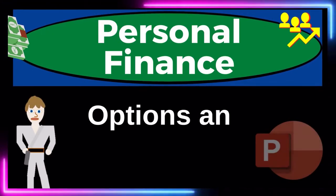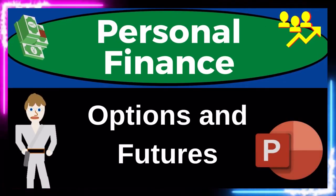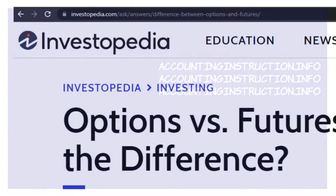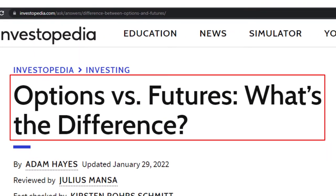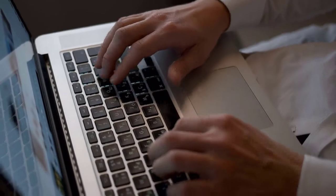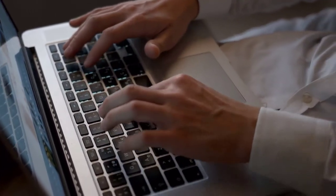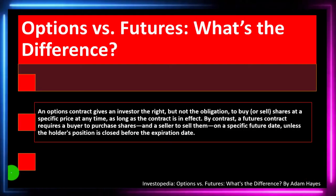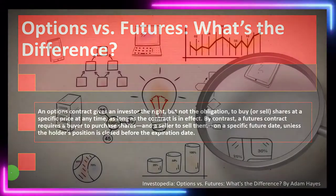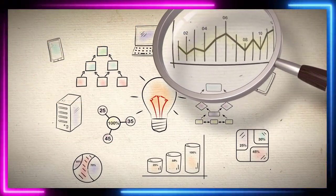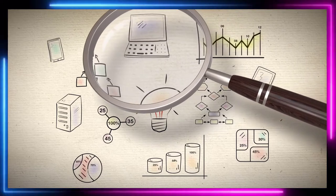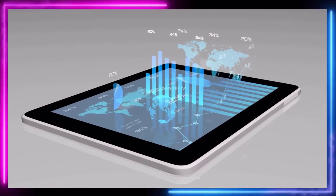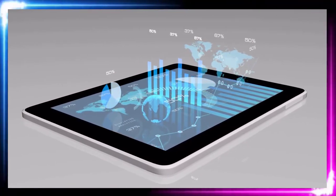This personal finance presentation covers options and futures. Most of this information comes from Investopedia's article 'Options versus Futures: What's the Difference,' by Adam Hayes, updated January 29, 2022. In prior presentations we've been looking at investment goals, investment strategies, and investment tools — keeping in mind the two primary categories of investments: fixed income, typically bonds, and equities, typically stocks. Now we're getting into more complex territory.